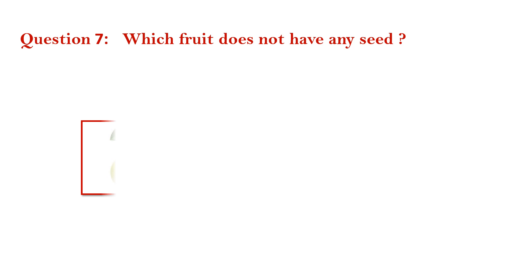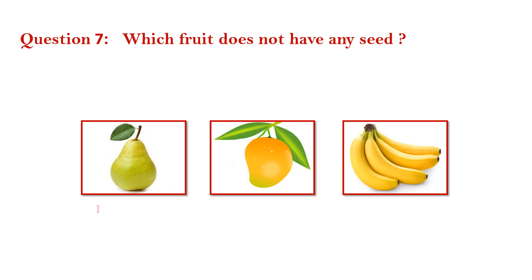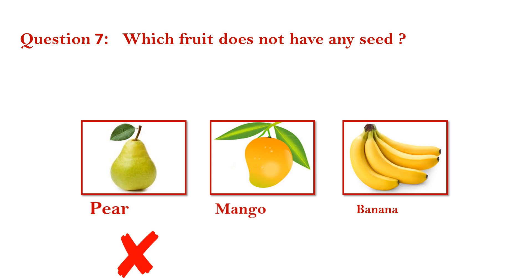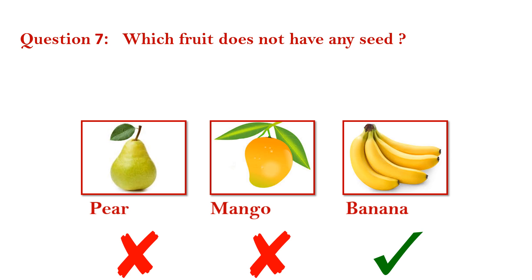Question number 7. Which fruit does not have any seed? Pear — wrong. Mango — wrong. Banana — right. Answer is banana.